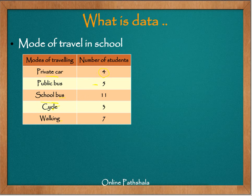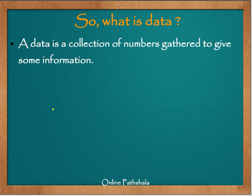So we are trying to take some numbers, associate them with properties like number of students and how they travel, and then generate some information out of it. So what is data? Data is a collection of numbers which are gathered to get some information. That's all for this session. Thank you.